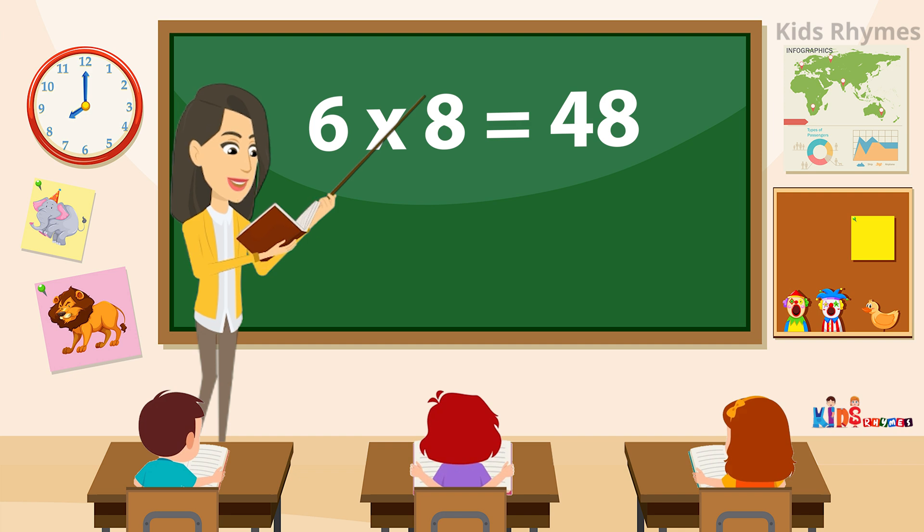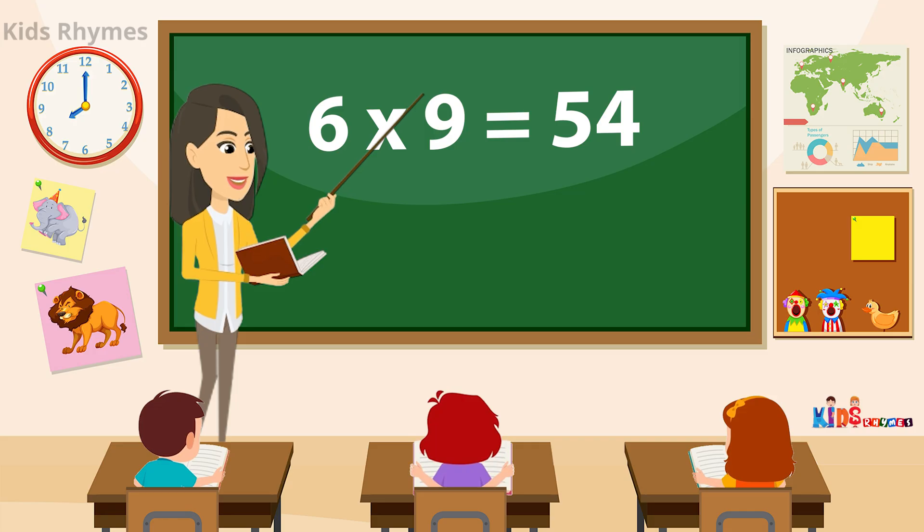Six eights are forty-eight. Count them fast, don't be late. Six nines are fifty-four. Shout it loud, learn some more.